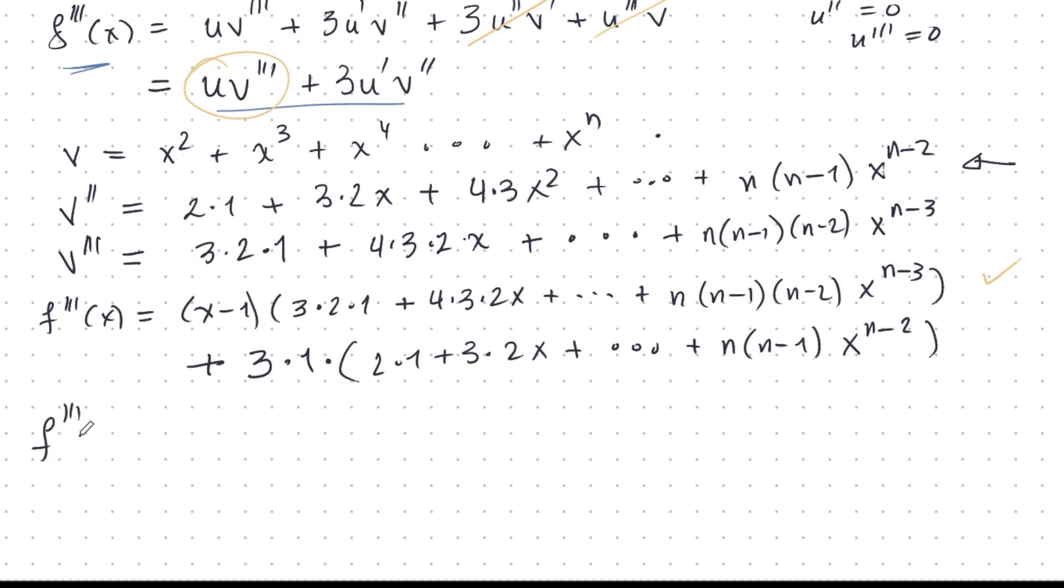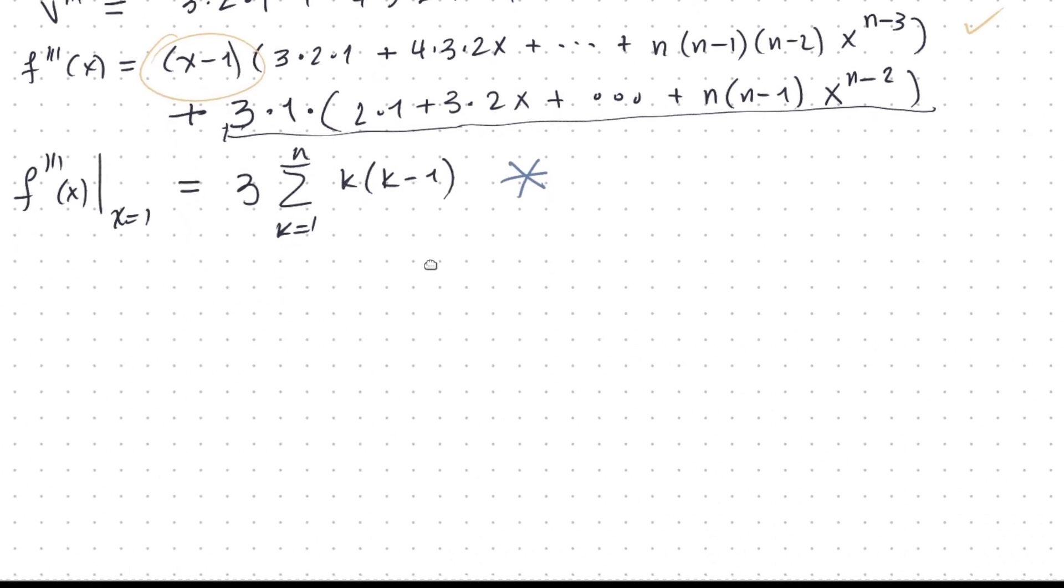Very good. So the third derivative evaluated at x equals 1. That works out nice and neatly. Because this then becomes 0. And I'm left with the following. Just this stuff here. But all of the x's are 1. So I can write this as 3 sum from k equals 1 to n, k, k minus 1. Let's put a nice star here. Because that's very important.